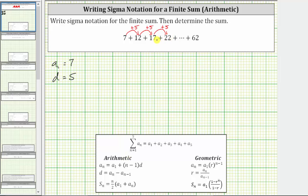Notice 22 minus 17 is equal to five, and so is 17 minus 12, as well as 12 minus seven. And now we can use this information to determine the formula for a sub n.